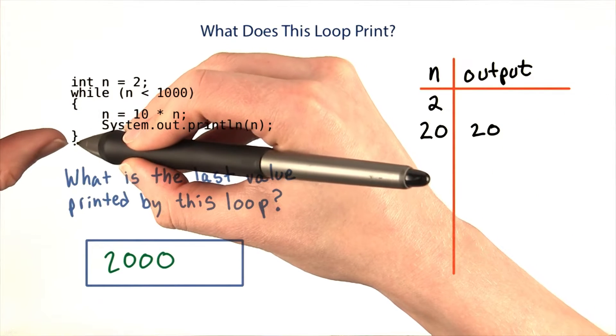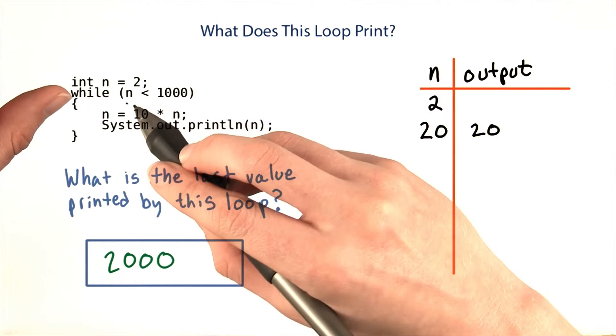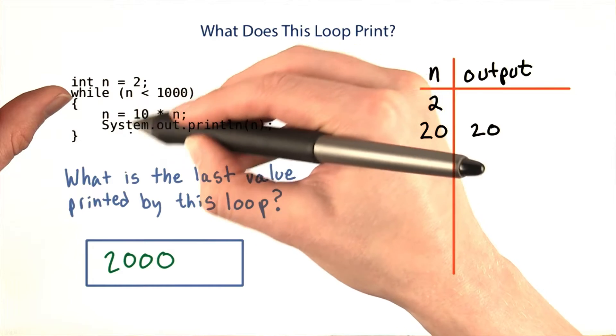Now I'm at the end of the curly braces, so I go back up to the top of the loop and check the condition again. n is 20 now, which is still less than 1,000, so I'm going to repeat the steps inside the loop again.